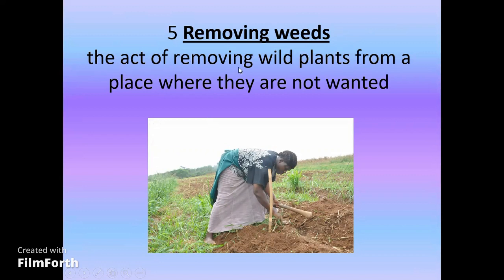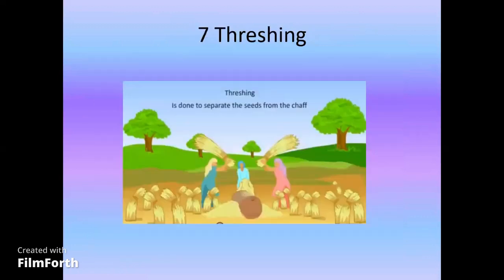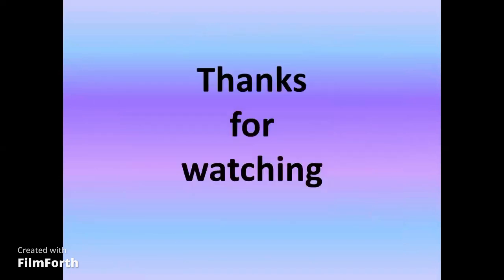When the crop is ripe, it is cut — this is harvesting. After harvesting comes threshing. Threshing is done to separate the seed from the plant. When the seeds are separated from the plant, for example, you can collect the seeds from the plant. This is the process of threshing.